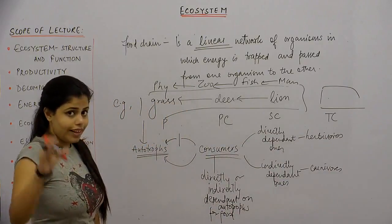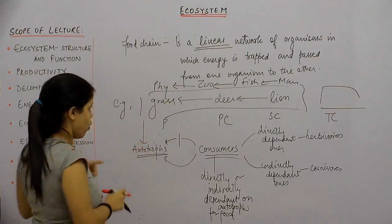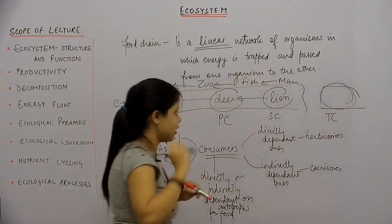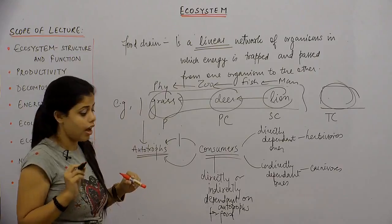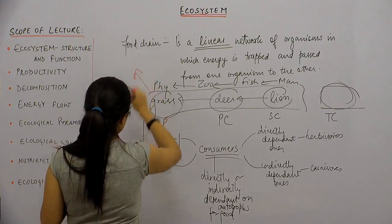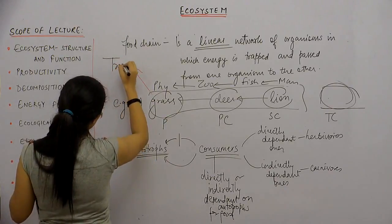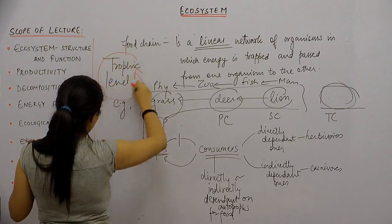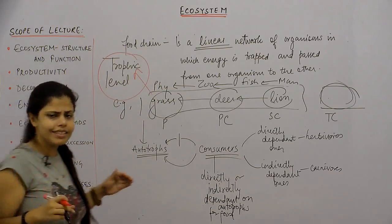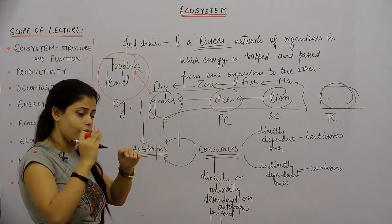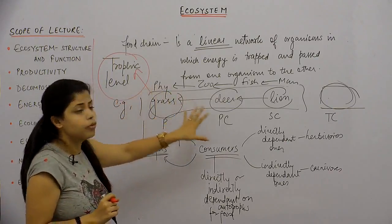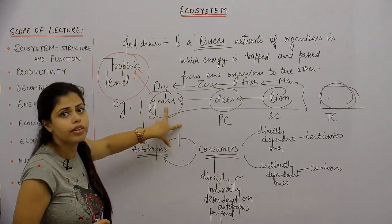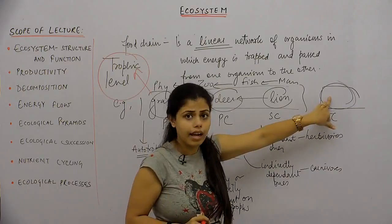The stages or levels of a food chain are called trophic levels. So a trophic level is simply a stage or level of a food chain. The producer is at the lower trophic level, and the tertiary consumer is at the higher trophic level.